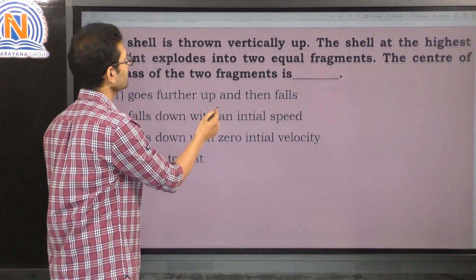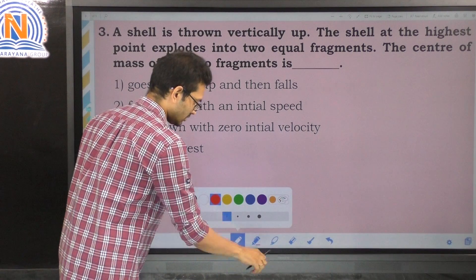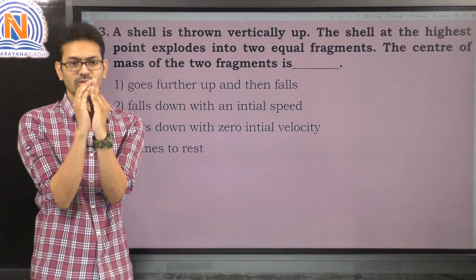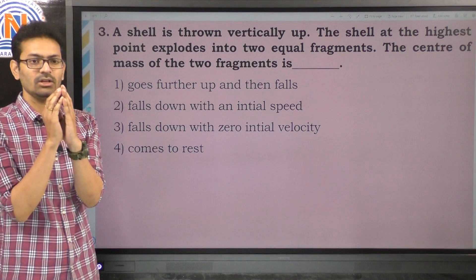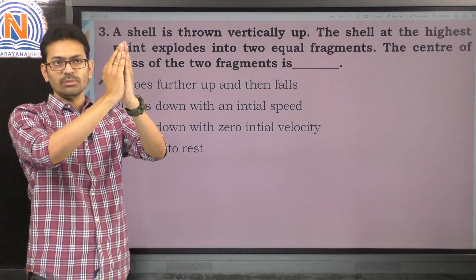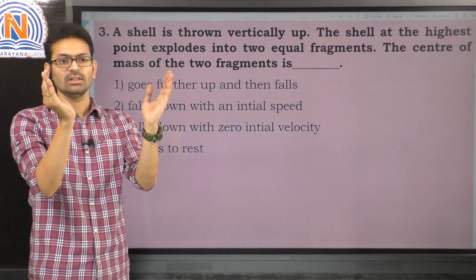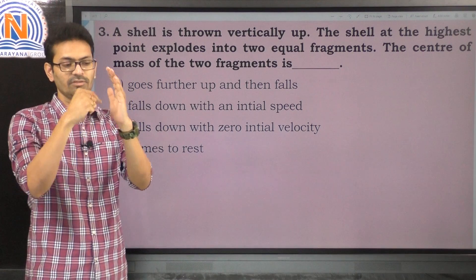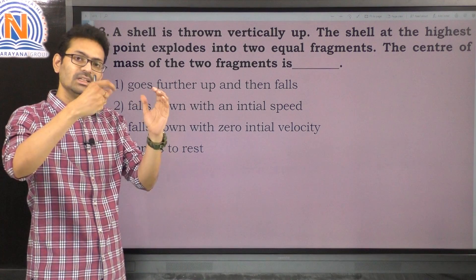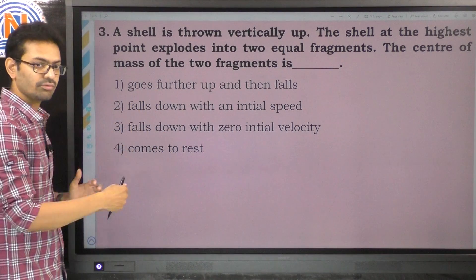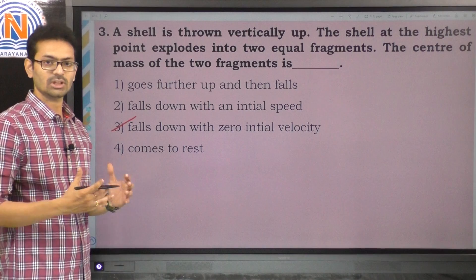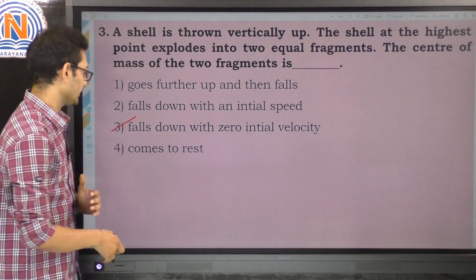The third question: a shell is thrown vertically upwards. At a certain height, it explodes into two equal fragments. The center of mass of these two fragments will be in the middle. After reaching a certain height, it falls like a freely falling body with an initial velocity of zero. So the option is the third option — falls down with zero initial velocity.